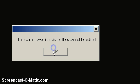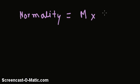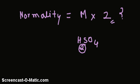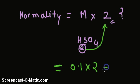So normality is equal to molarity times the number of H atoms in the acid. So since H2SO4 has 2 H atoms, it's multiplied by 2. That is equal to 0.1 multiplied by 2, which equals 0.2 normal. That is the answer.